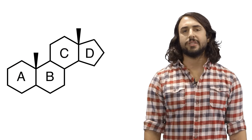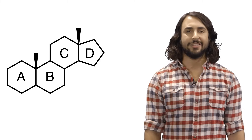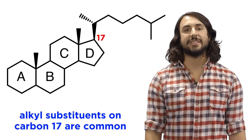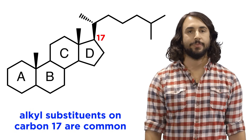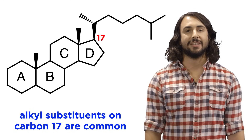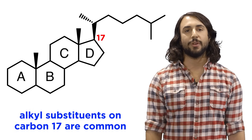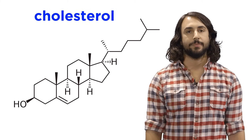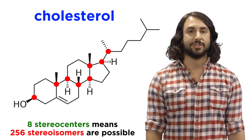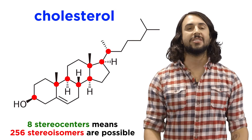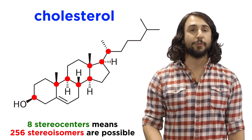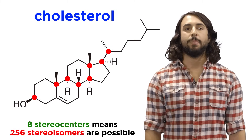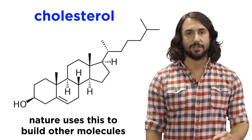Now where else do steroids vary in structure? A common location for a substituent is carbon 17. Different alkyl groups at this location will generate different steroids, one of which is cholesterol. Cholesterol has eight stereocenters, which means 256 different stereoisomers of this structure are possible, but only this specific one is cholesterol.